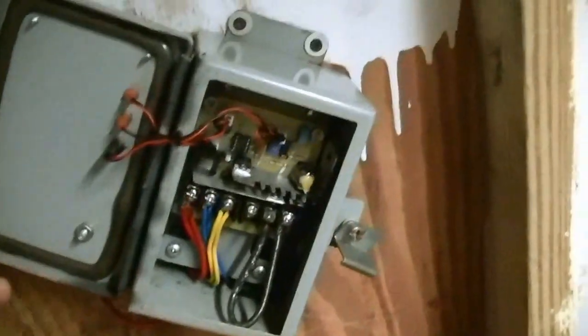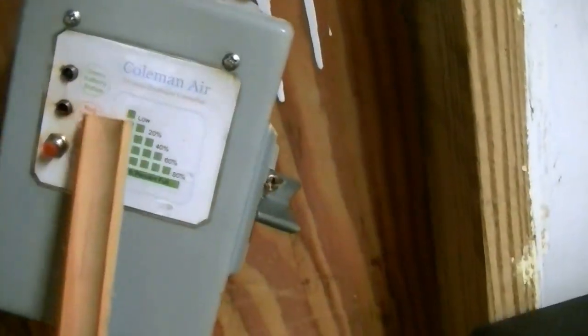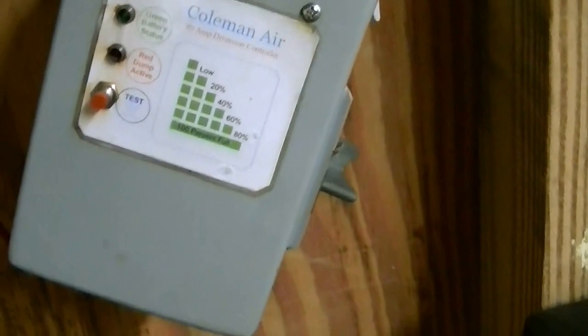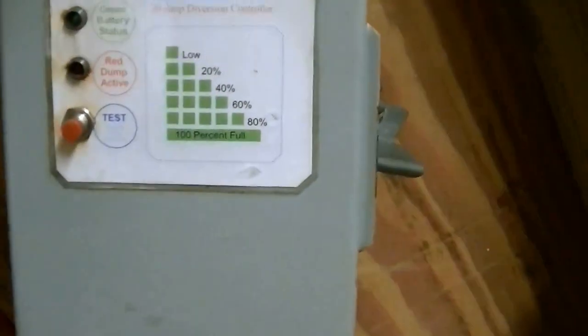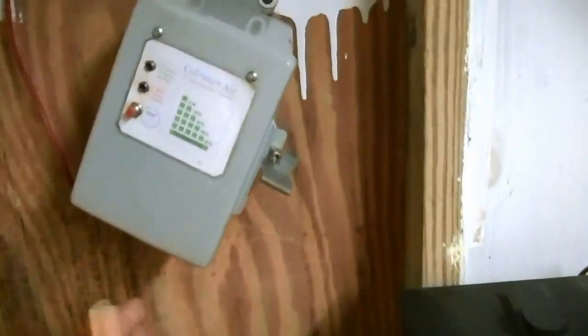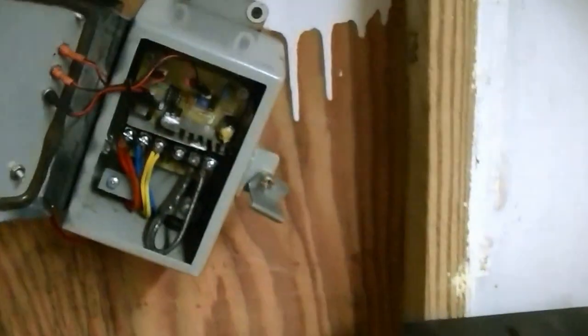My charge controller is a Coleman Air. It has these little lights that blink depending on how many times it blinks is the charge level of your battery. Again, I mounted it at an angle so nothing would build a nest on it. I've got this out in my barn.